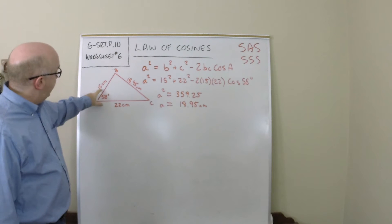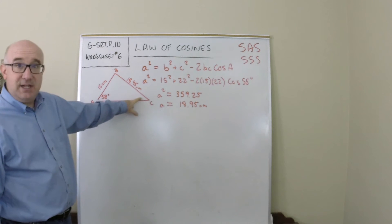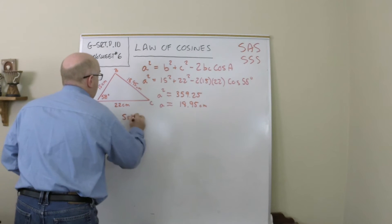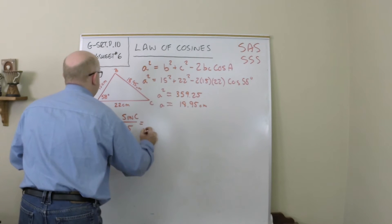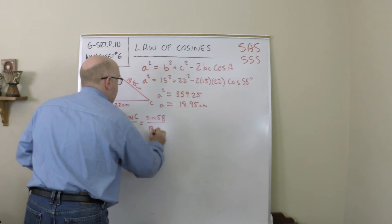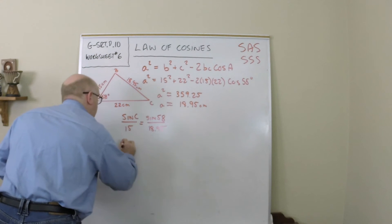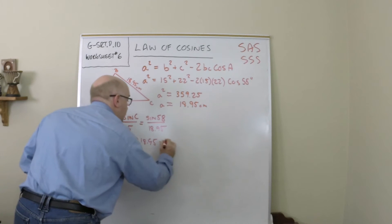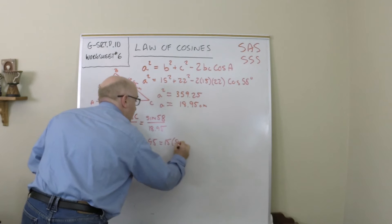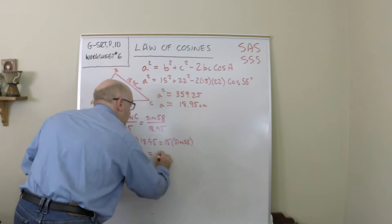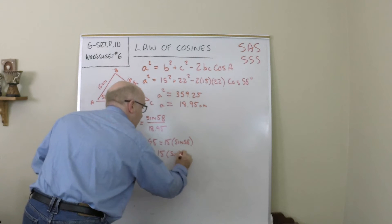So this 15 would be across from C. C would be the smallest. So I am confident I can say the sine of C over 15 as the sine of 58 over 18.95. Sine of C times 18.95 equals 15 sine of 58, and then sine of C equals sine of 58 times 15 over 18.95.